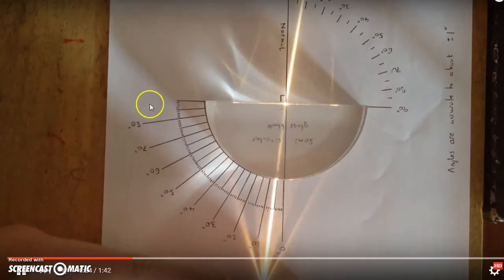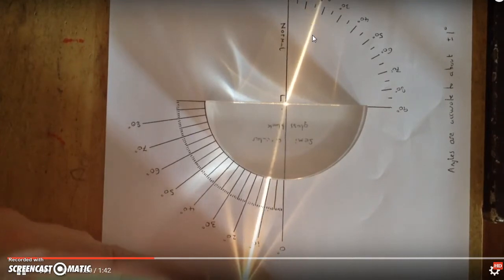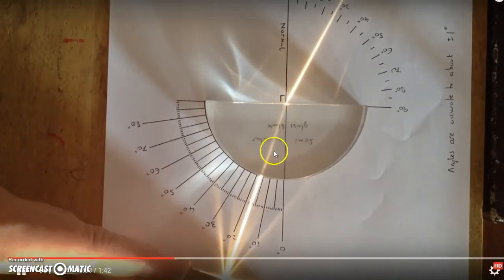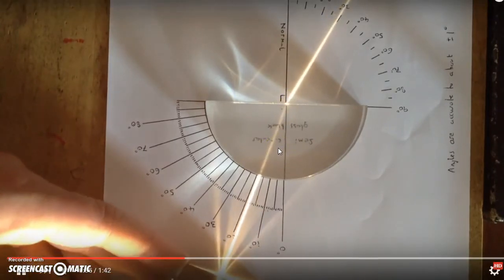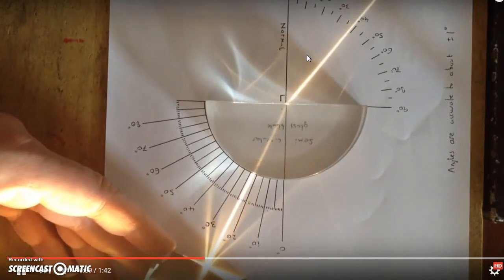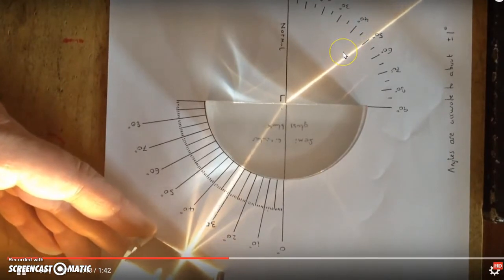From glass into air, it bends away from normal. What does that mean? You can see that the incident angle is smaller than the refracted angle, which is in air. The refracted ray bends away from normal.